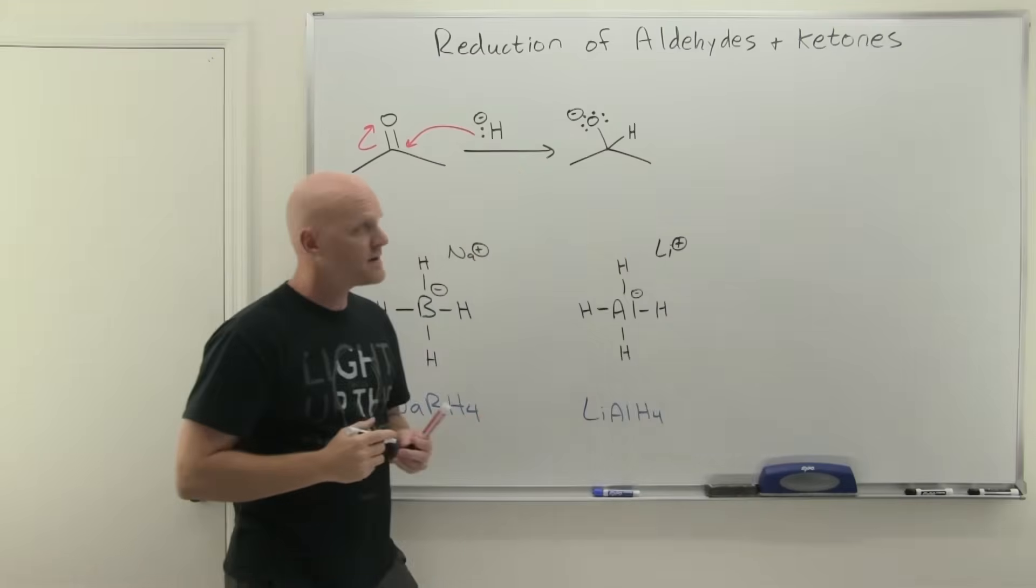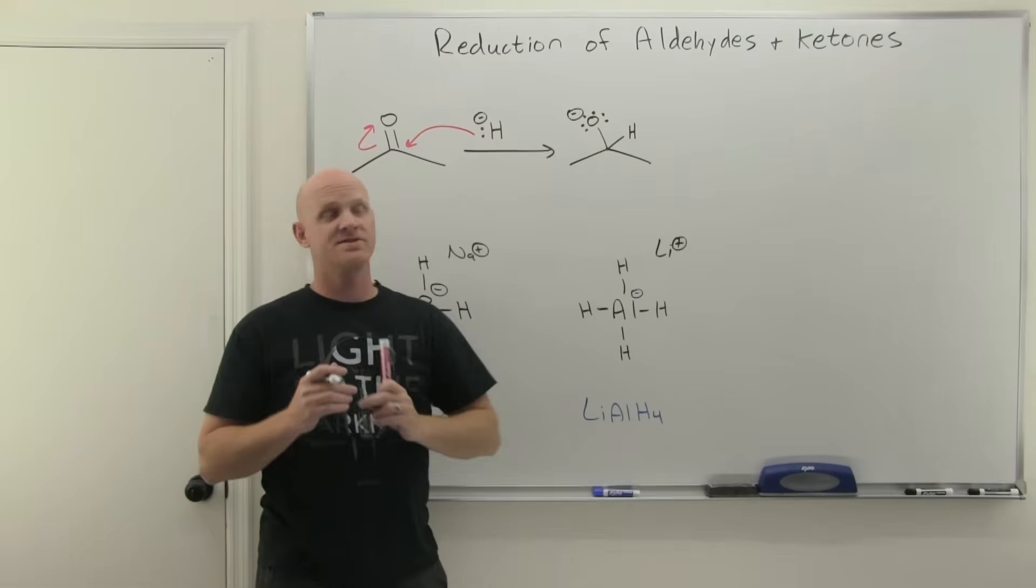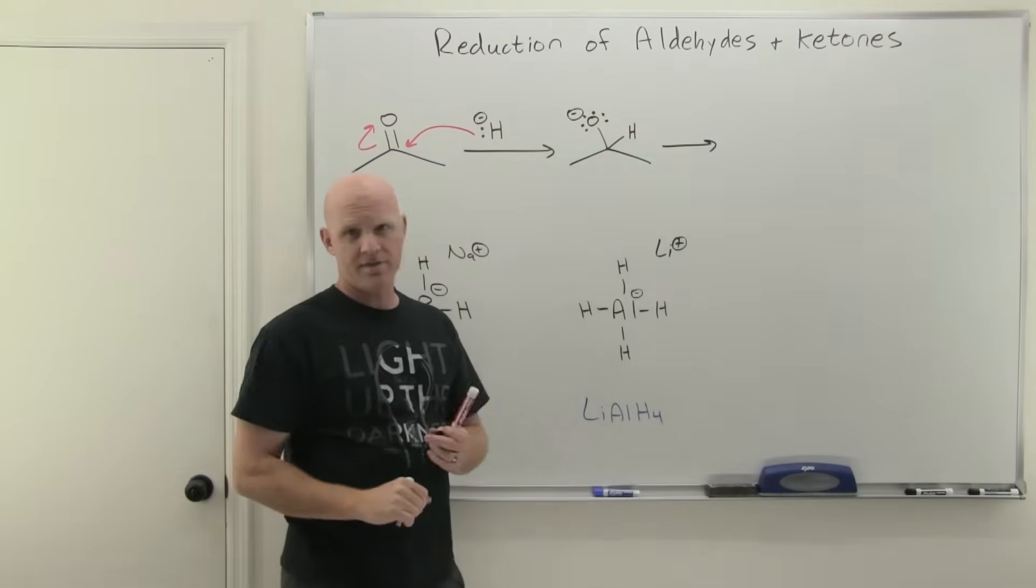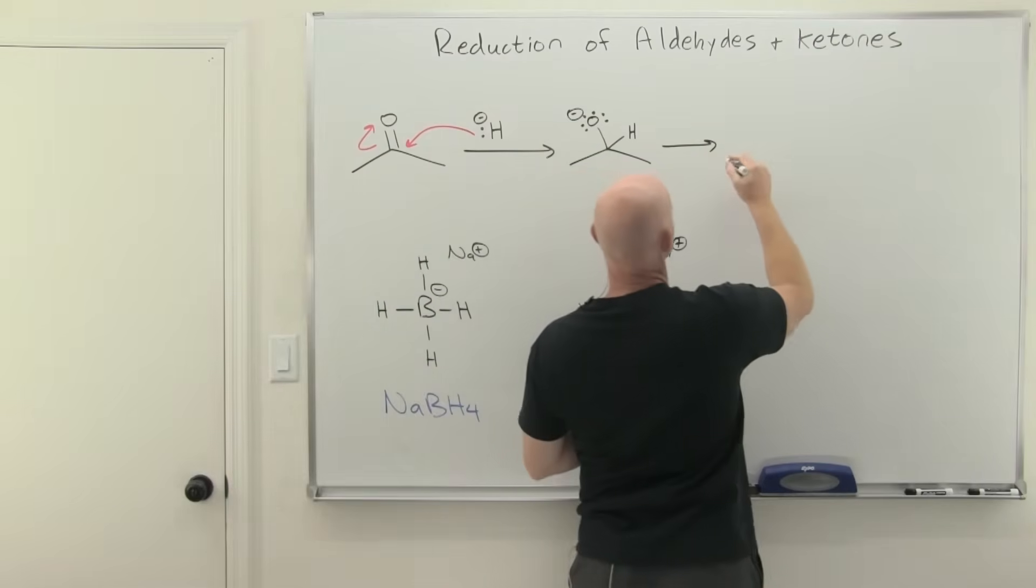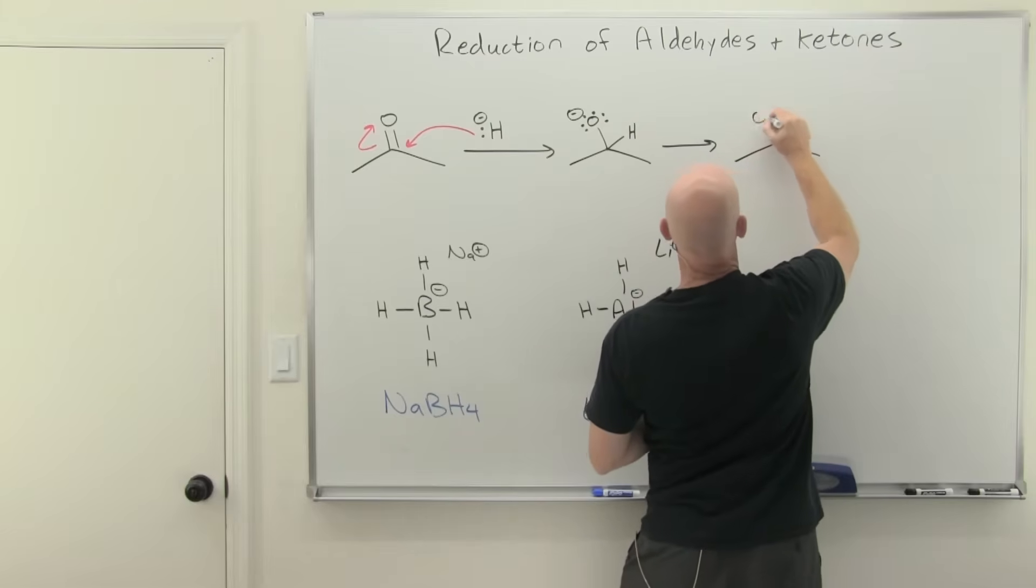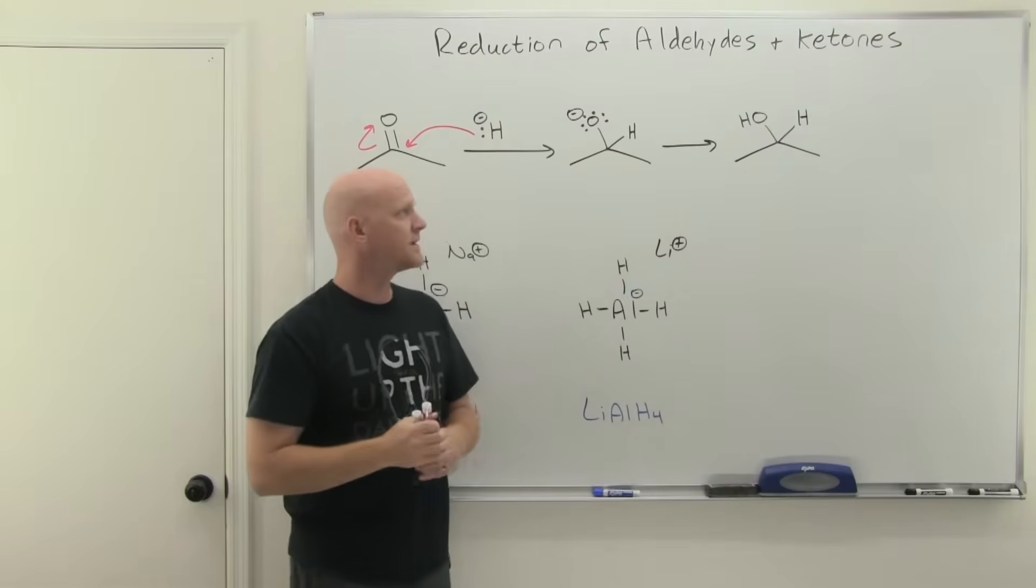Similar to other reactions we saw, we get an alkoxide with our new nucleophile attached, in this case just a hydrogen. From there, the alkoxide gets protonated. I'll leave the source of that proton blank for now, but that's your result.